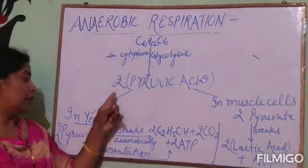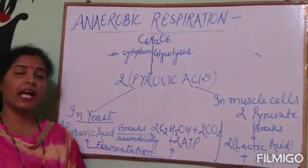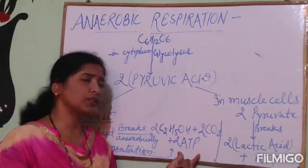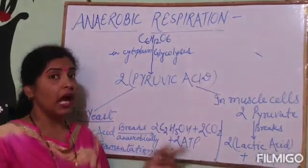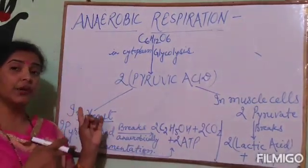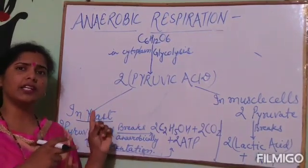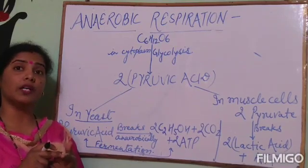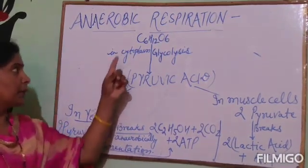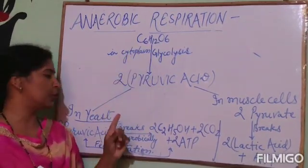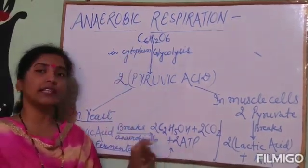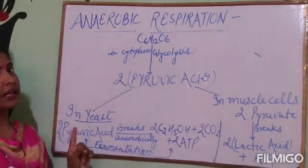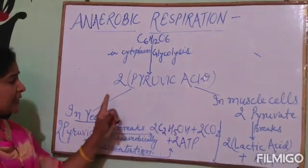In yeast, fermentation takes place anaerobically, so only a very small amount of energy — just 2 ATP — is released. Comparing this to aerobic respiration: during aerobic respiration, 38 ATP is released from the breakdown of one molecule of glucose, but in anaerobic respiration in microorganisms, only 2 ATP energy is released from one molecule of glucose.